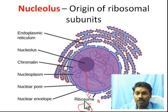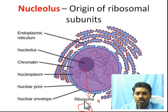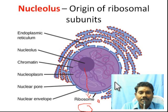Whereas in eukaryotes, you have a nucleolus. Here, DNA codes are used, and some proteins join together to form the ribosomal subunits.